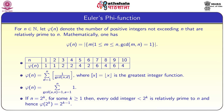If n = 2^k for some k ≥ 1, then every odd integer less than 2^k is relatively prime to n. Hence φ(2^k) = 2^(k-1). This gives a nice intuition of the definition of φ.